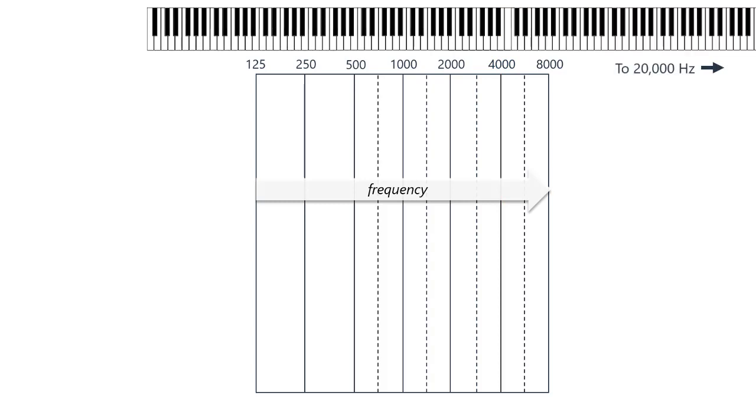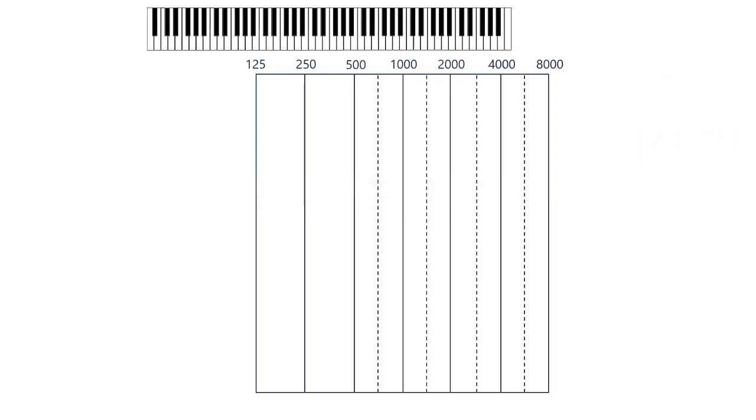Dogs can hear even higher. That's why they can hear a dog whistle that starts at 23,000 Hz, and we can't. Why does the audiogram only go up to 8000 Hz, then, if we can hear higher than that?